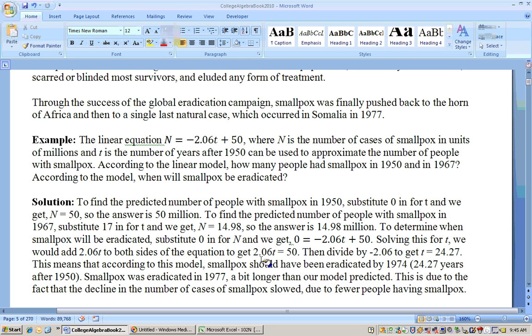Then the last step, divide both sides by the 2.06, and you'll get 24.27. That means 24.27 years after 1950, which would be about the year 1974 or 1974.27. That's when this model predicted that smallpox would be eradicated. It was actually eradicated in 1977. So this model does do a really good job.